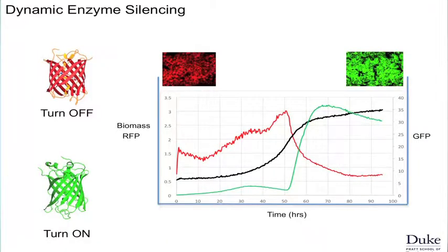We can degrade the enzymes required for growth and turn on those needed for production. We have several approaches: if you're a biologist, we're using both RNA targeting and protein targeting to turn these things over. We demonstrated this with two colored proteins — red fluorescent and green fluorescent — turning one on and the other off, and this is exactly what happens when we do this.